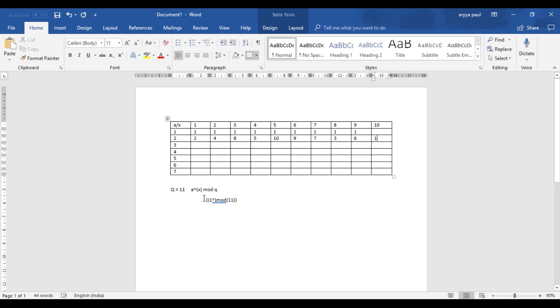As you can see, our condition is actually being fulfilled by 2. The condition was that all the numbers from this formula's result will be actually lesser than Q, and indeed everything is lesser than 11. So what we conclude from this is that Alpha, or A, can be 2. That is, 2 is a primitive root of 11. Now that we have the prime number and its primitive root, it's time we actually calculate the public and private key for A and B both.